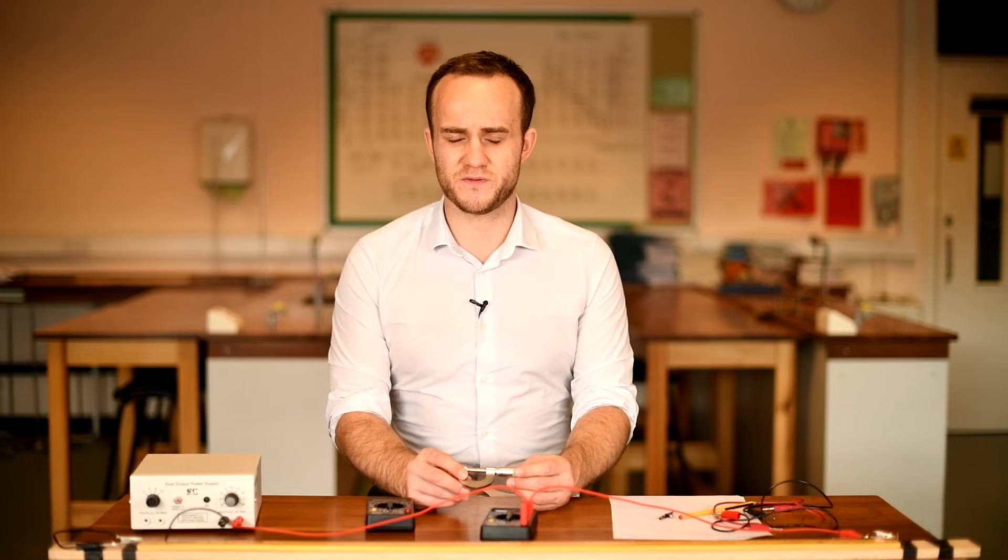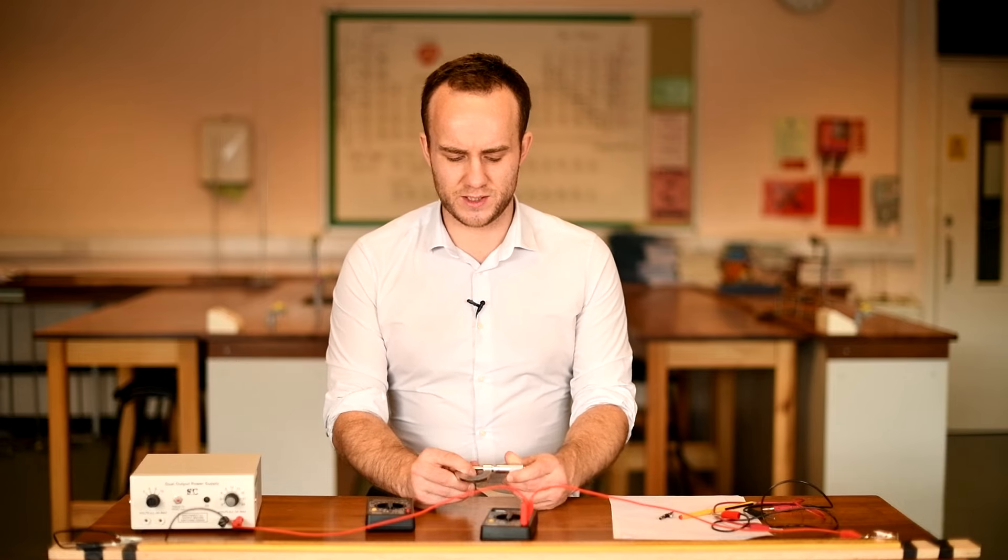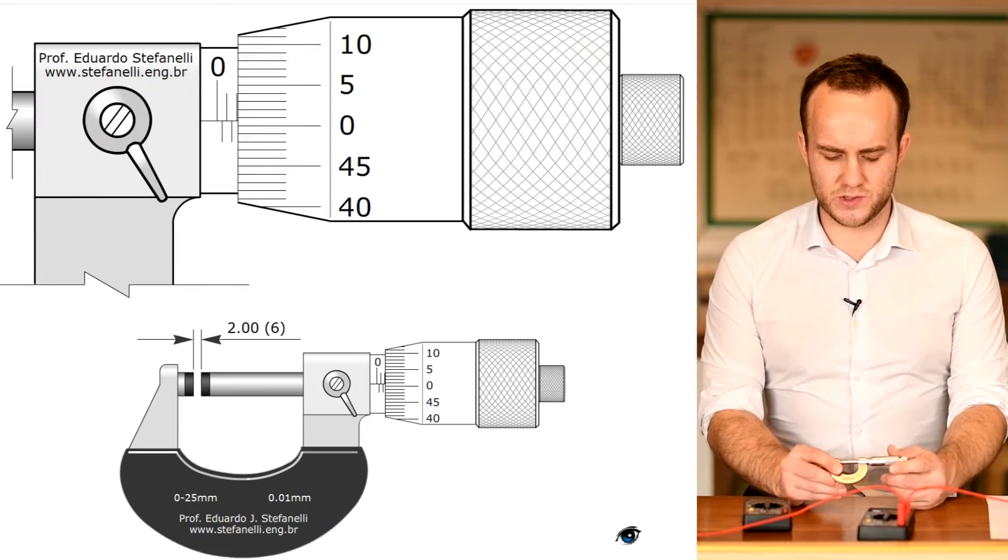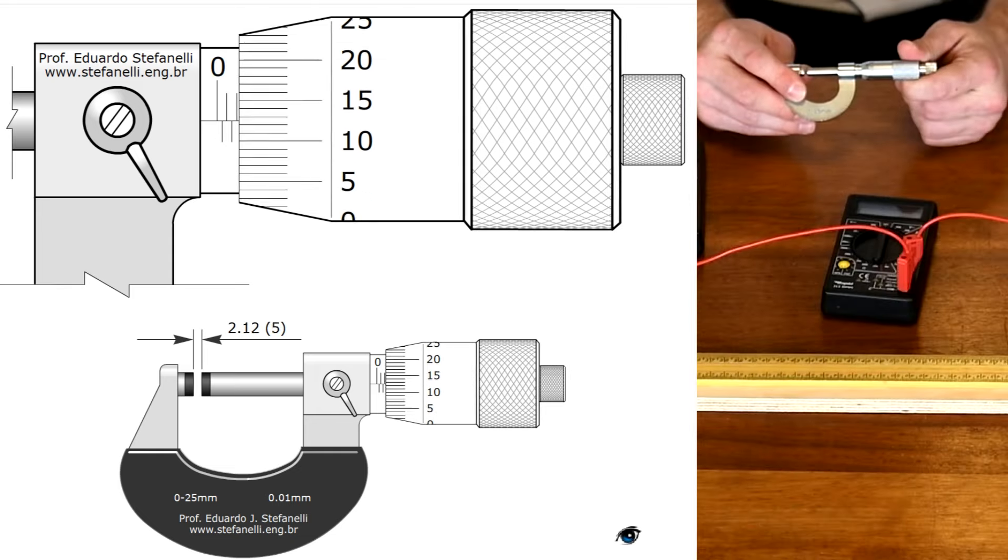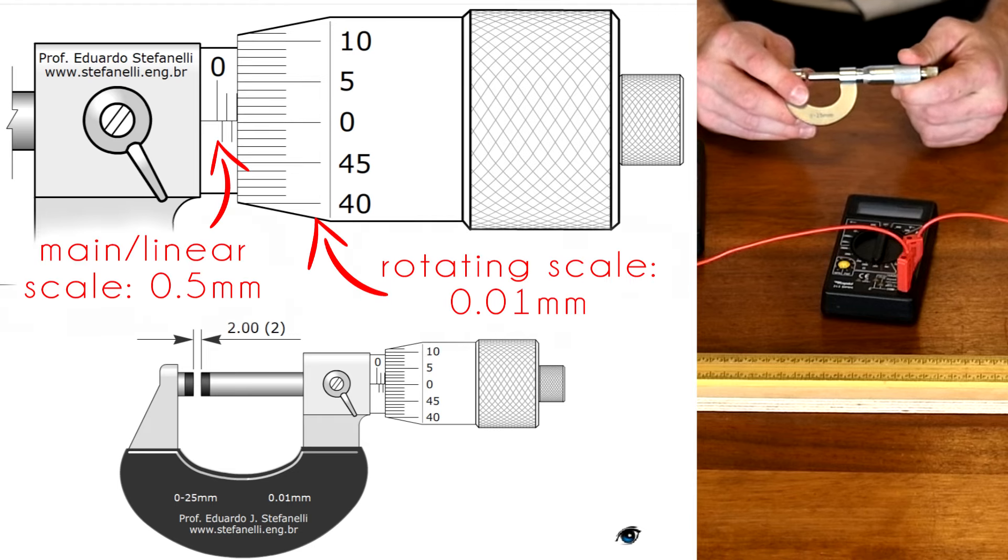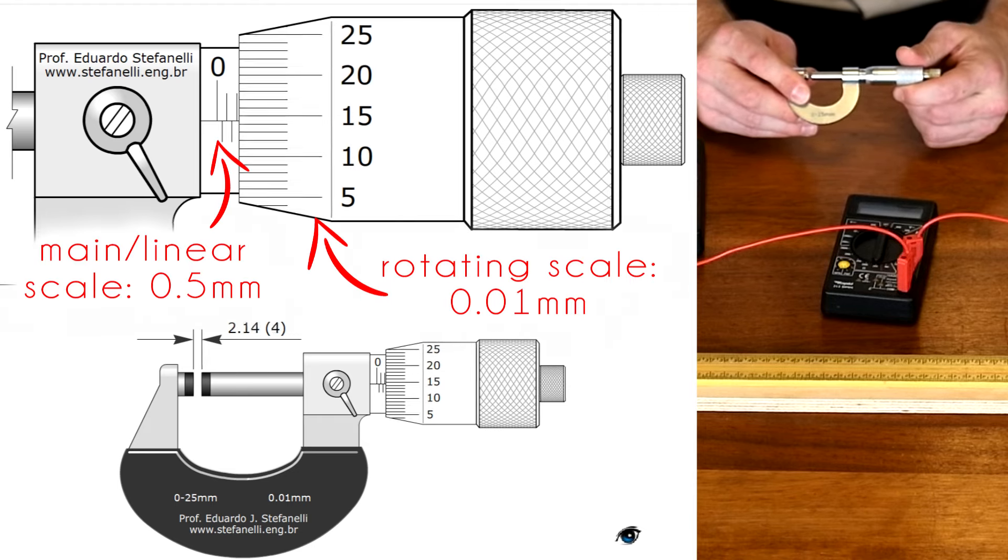If you haven't used a micrometer before it's fairly easy. We have the main scale and as we turn the drum we actually move the end of it, move it past the lines on the main scale that tells us how many millimeters or halves of millimeters we've gone past.